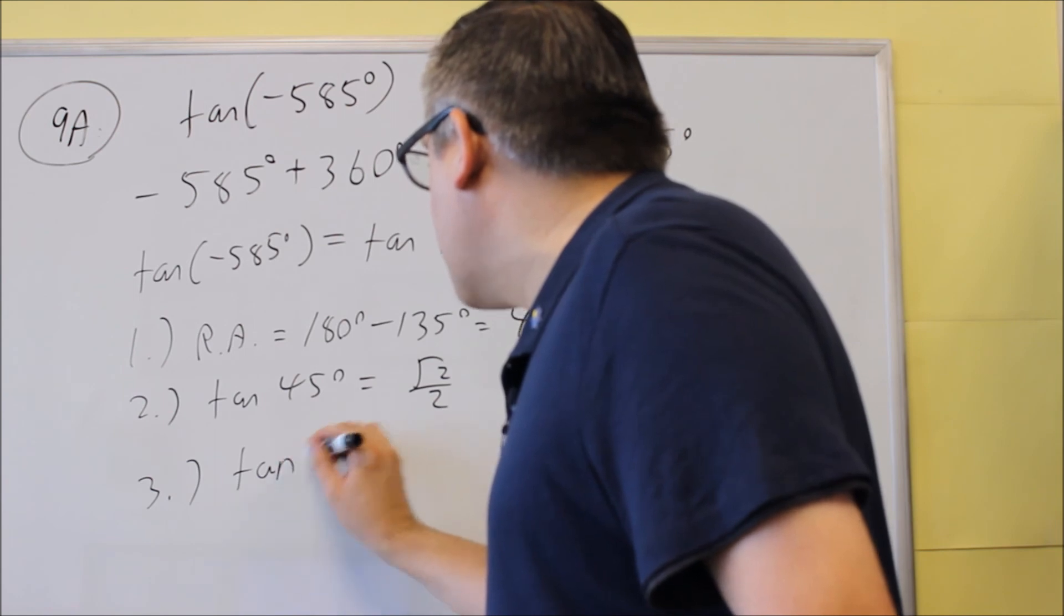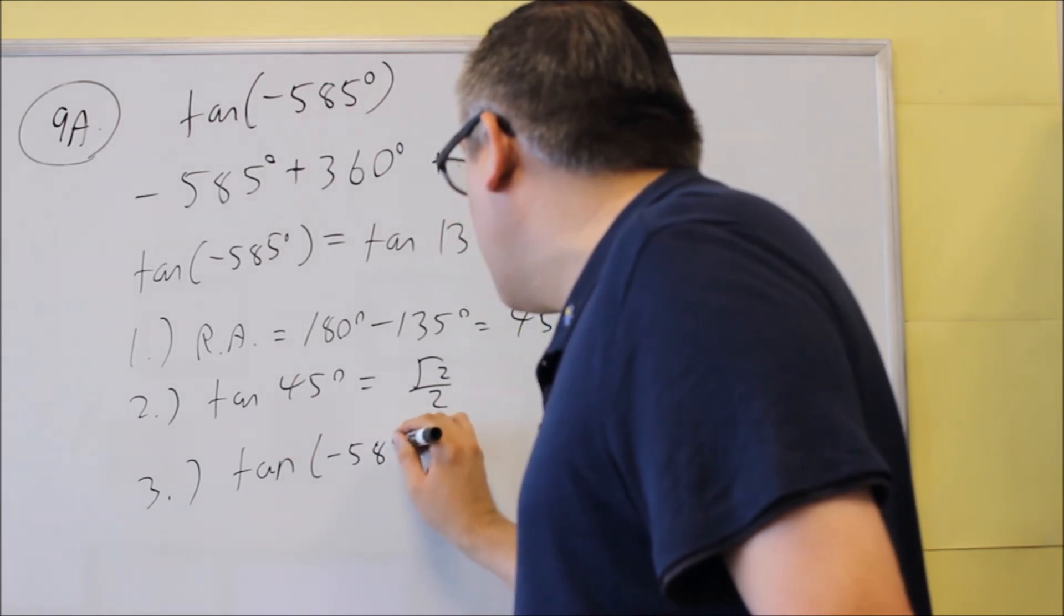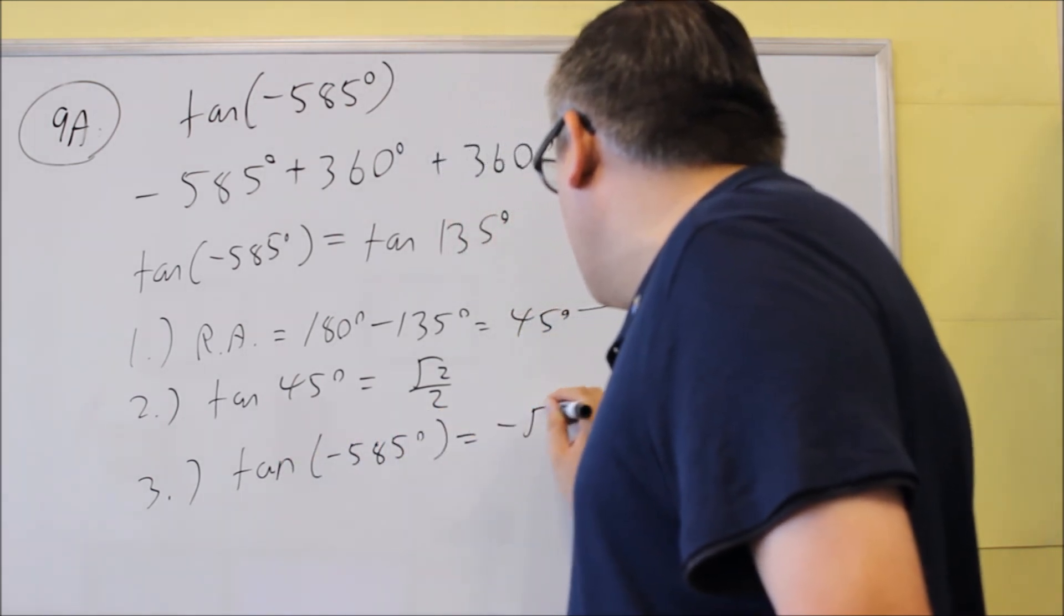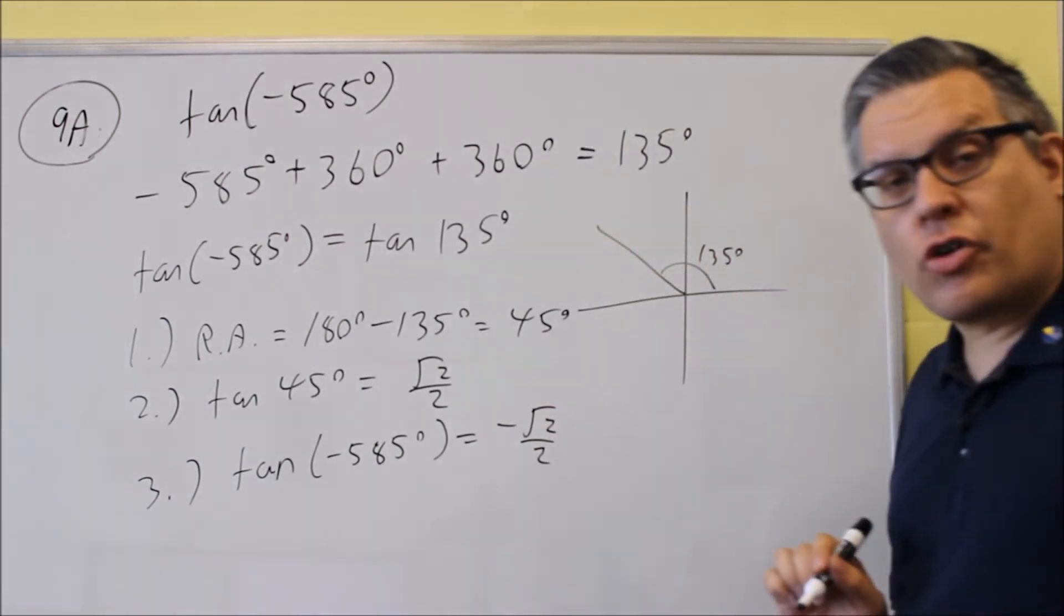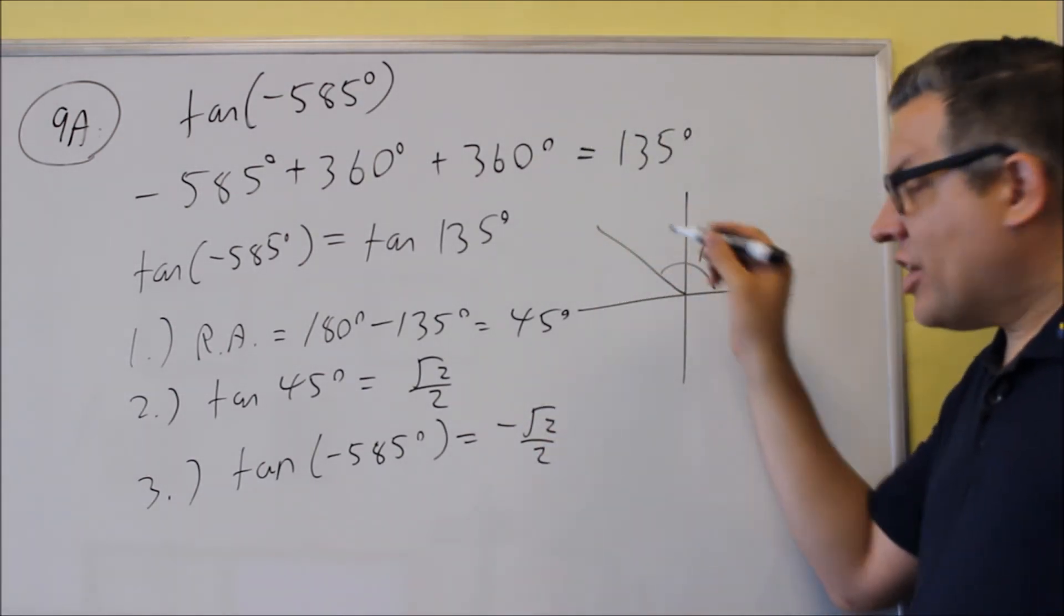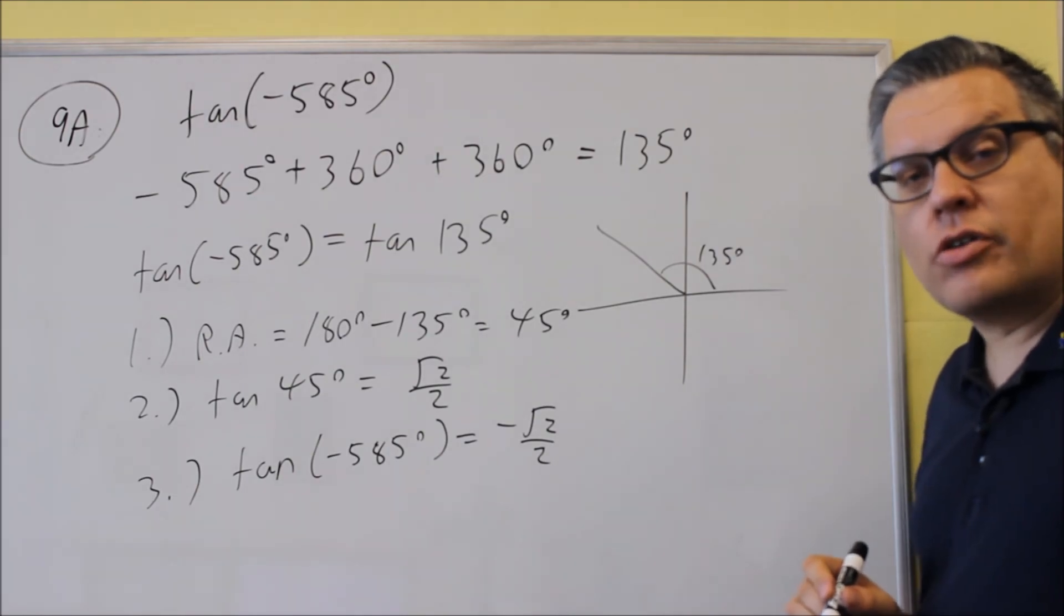So my final answer, tangent of negative 585, would be equal to negative square root of 2 over 2. Again, we're putting negative there because tangent would be negative in the second quadrant.